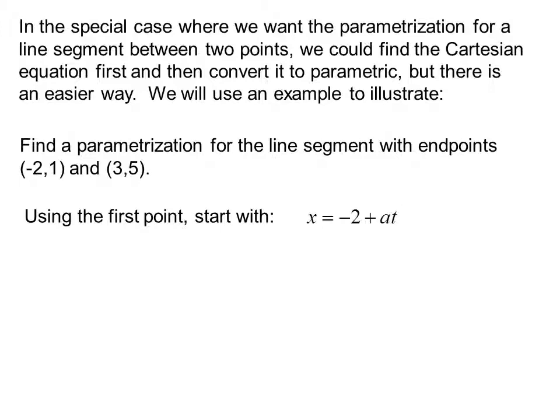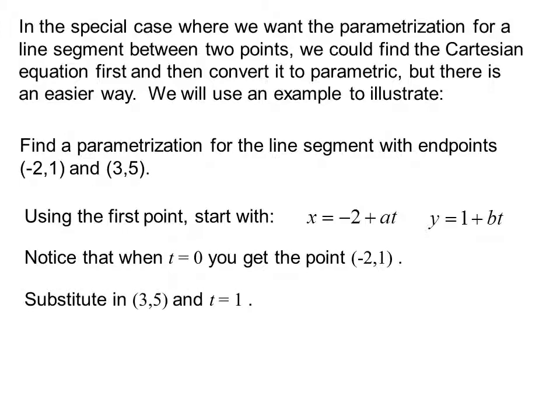Using the first point, start with x equals -2 plus at, and y equals 1 plus bt. Notice that when t equals 0, you get the point (-2,1). This term here cancels out so we get x equals -2, and this term cancels out so you get y equals 1. Substitute (3,5) and t equals 1.